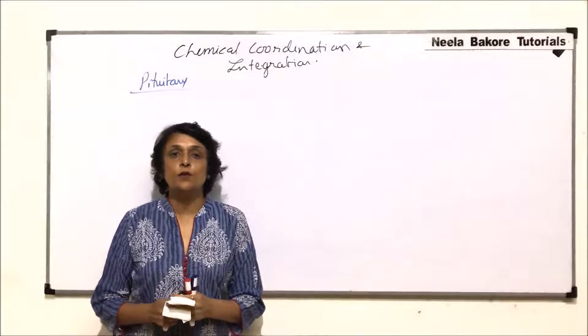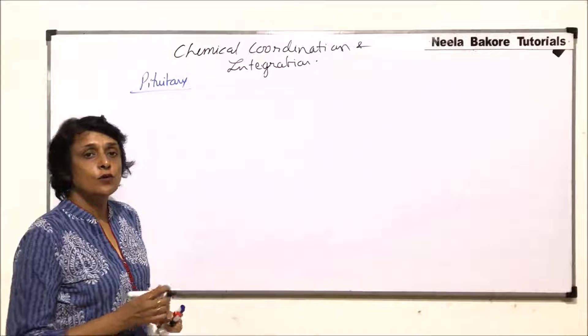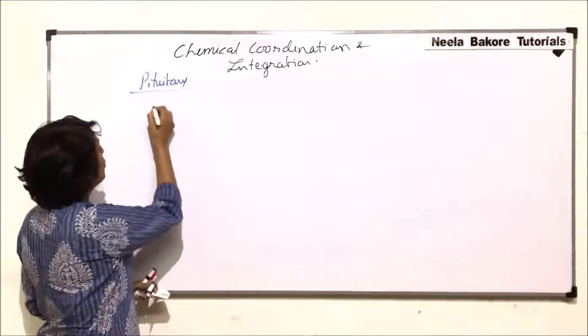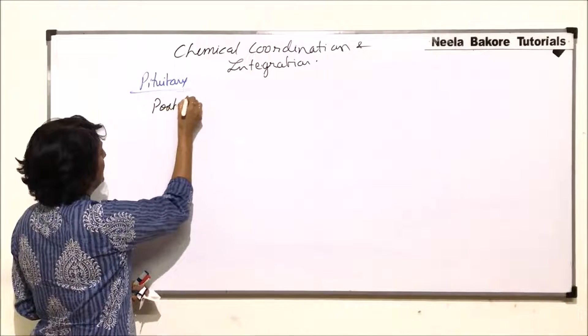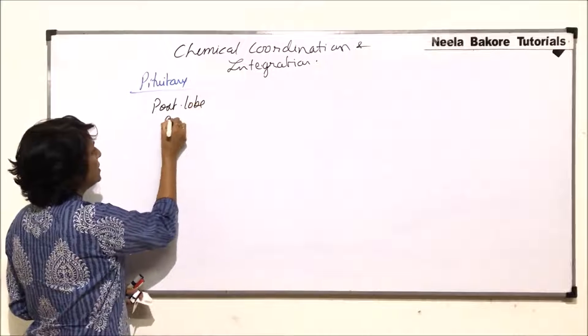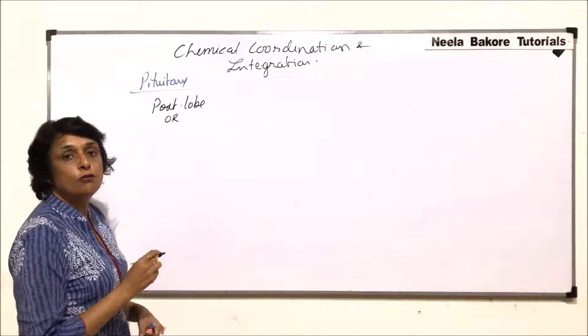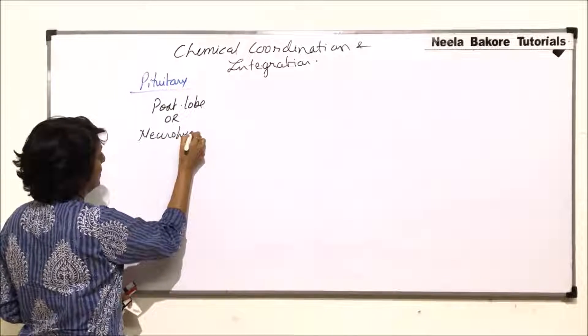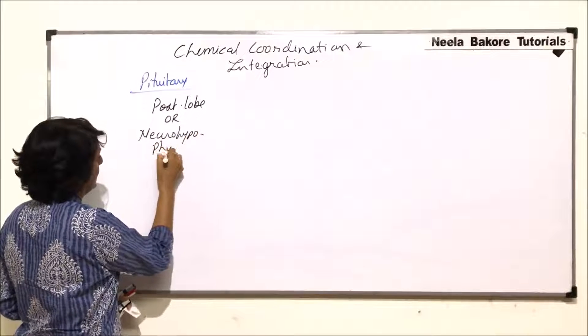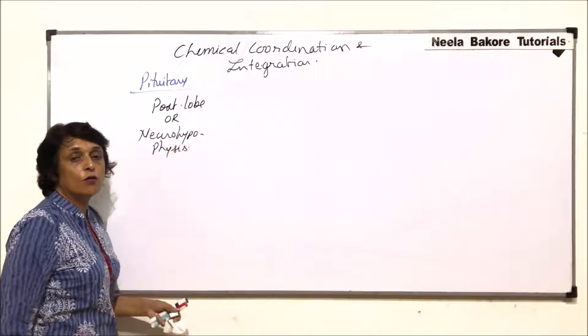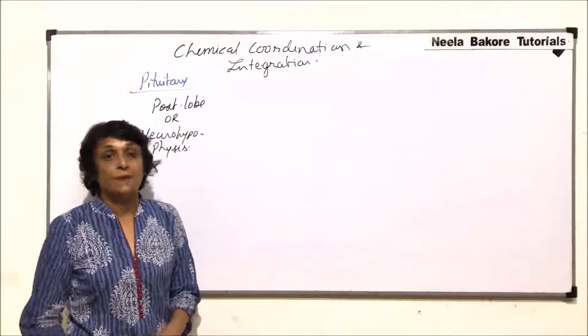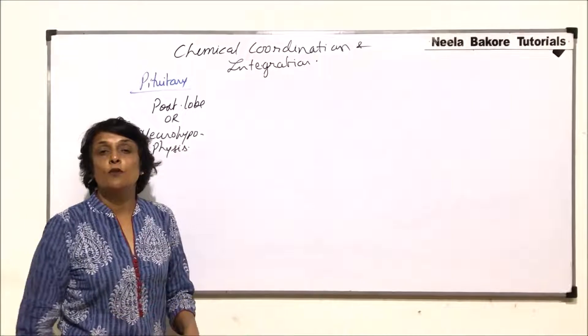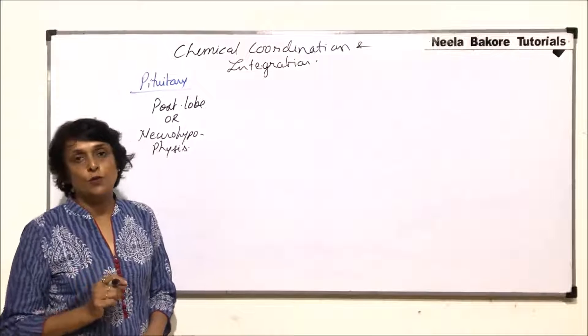In this video we will talk about the hormones of the posterior lobe of pituitary. The posterior lobe is also known as neurohypophysis, and we also call it pars nervosa. From the posterior lobe of pituitary there are two hormones which are released.